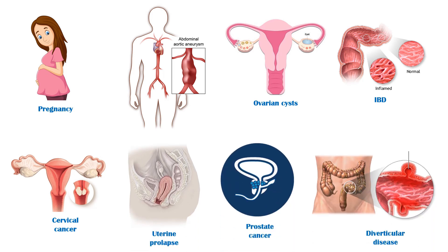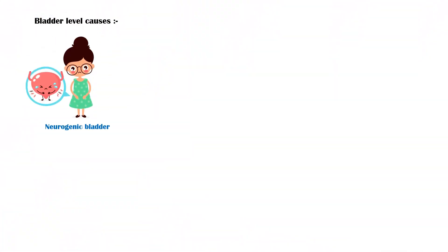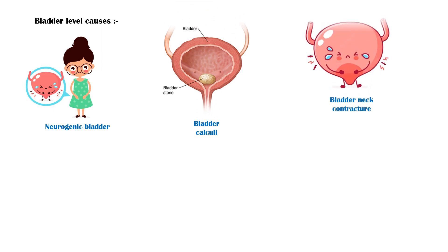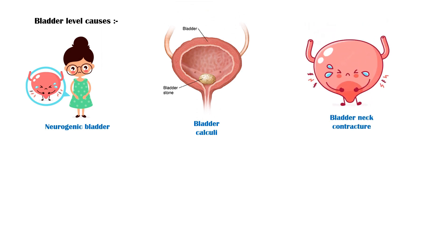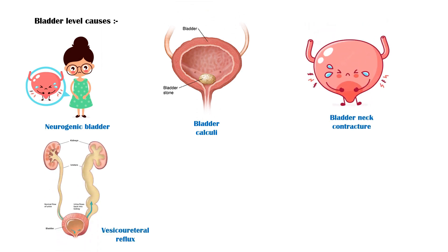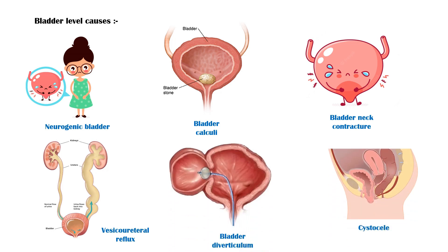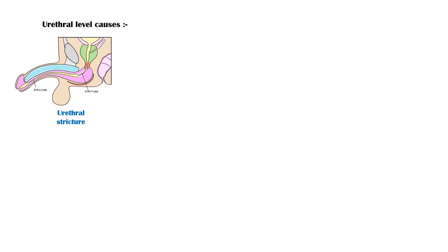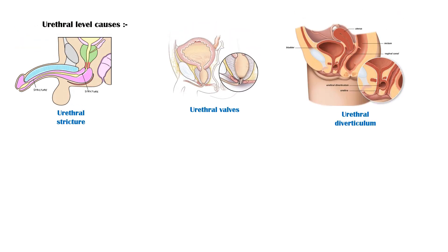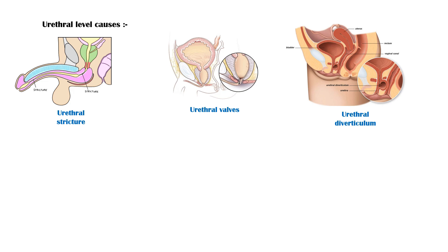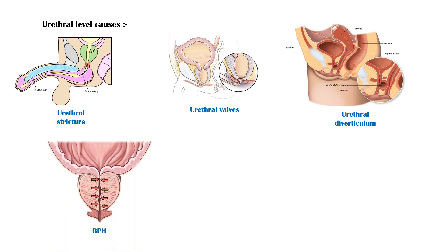Some bladder-level causes include: neurogenic bladder, bladder calculi, bladder neck contracture, vesicoureteral reflux, bladder diverticulum, and cystocele. Some urethral-level causes include: urethral stricture, urethral valves, urethral diverticulum, benign prostatic hyperplasia, and prostate cancer.